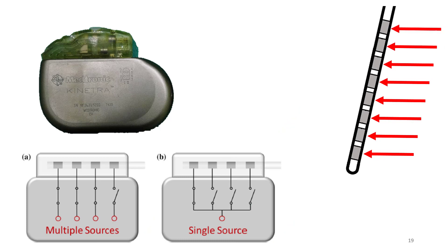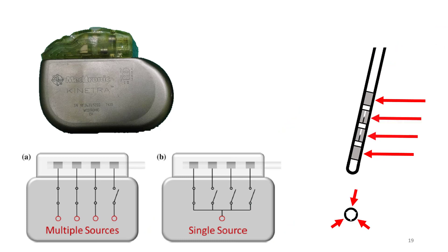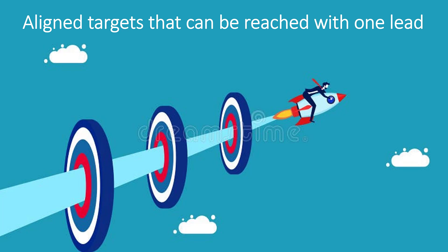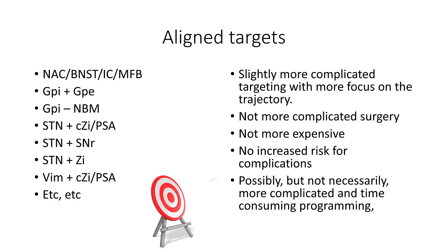However, we have lately also seen the development of hardware which should be beneficial regarding multiple targets, such as multiple source IPGs with individual control of the contacts, as well as electrodes with more contacts and directional steering of the current. Looking at the current situation regarding multiple targets in DBS, it is important to differentiate between targets that can be reached with one single electrode and those necessitating multiple electrodes. We have quite a few of these aligned targets — some only suggested, others commonly used. With aligned targets, the targeting becomes slightly more complicated with more focus on trajectory, but the surgery is not more complicated or more expensive, and there should not be an increased risk for complications.